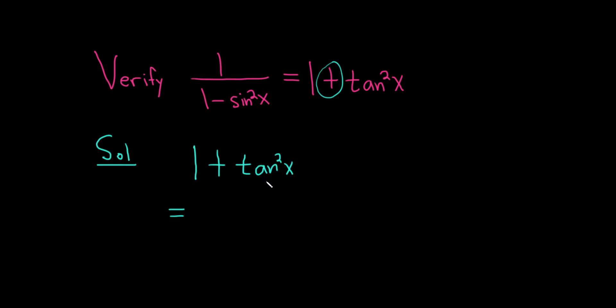So what I'm thinking is we can write tangent in terms of sine and cosine and then perform the addition. So this is really 1 plus... Well, tangent is sine over cosine. So tangent squared will be sine squared x over cosine squared x.